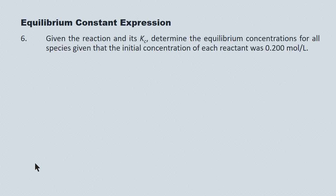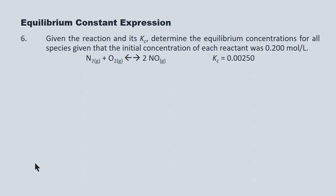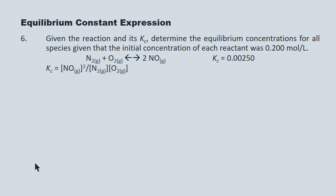This next question deals with the first shortcut method: the perfect square method. Given the reaction of N2 + O2 ⇌ 2NO and its Kc of 0.00250, determine the equilibrium concentrations for all species, given that the initial concentration of each reactant is 0.200 mol/L. The Kc expression is [NO]² divided by [N2] times [O2] — all equilibrium concentrations.